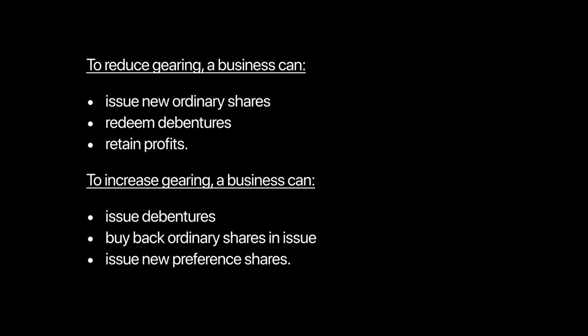To increase gearing for a low geared company, the firm can issue new debentures or loans, buy back ordinary shares (reducing the equity amount), or issue new preference shares. Share buybacks are commonly done when companies have excess cash — reducing the shareholding amount increases the gearing ratio. Preference shares are useful here because they are fixed cost capital that can be repaid and do not become permanent capital.